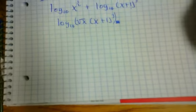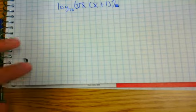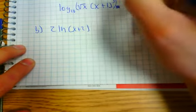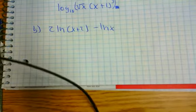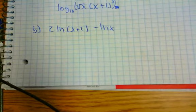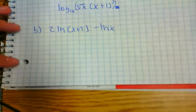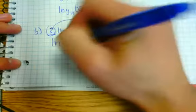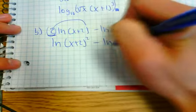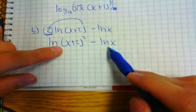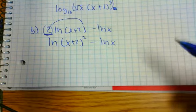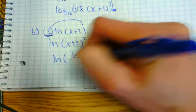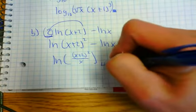I'm going to give you an example to try: 2 natural log of (x + 2) minus ln of x. Pause the video and give it a try. First, we notice the coefficient 2 in front, so we use the power property to rewrite it as ln of (x + 2) squared minus ln of x. Then we have two logarithms with the same base being subtracted, so we use the quotient property and rewrite it as the natural log of (x + 2) squared over x. You've successfully condensed the logarithm.